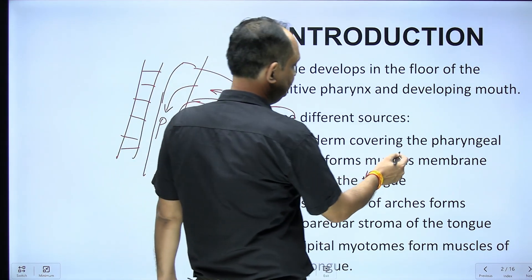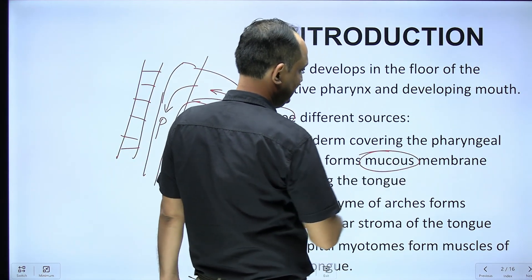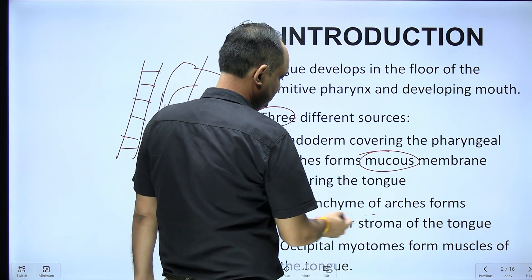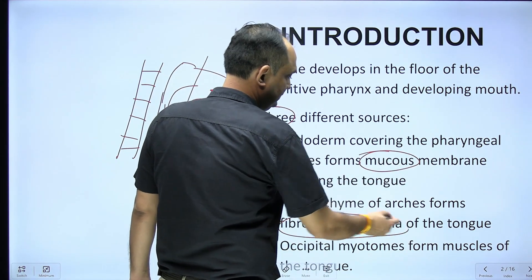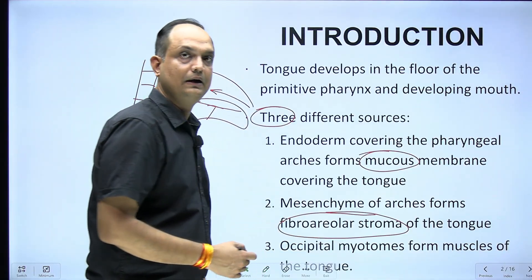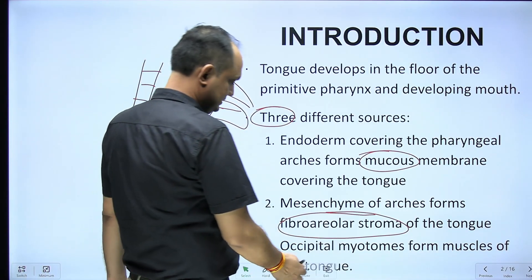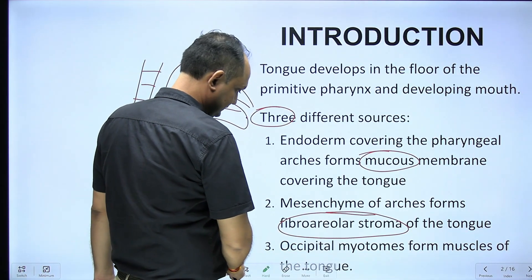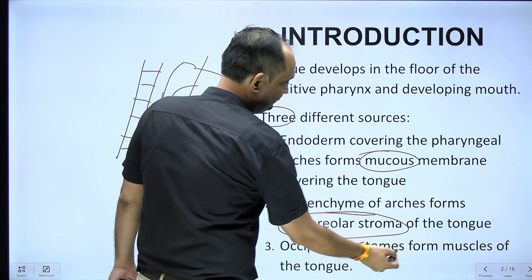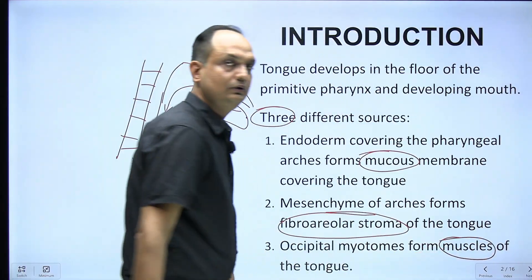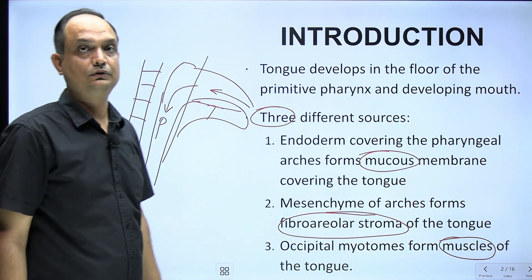The three sources are: first, the mucosa of the tongue; second, the areolar and connective tissue of the tongue; and third, the muscles of the tongue.